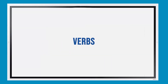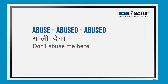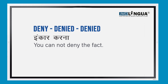Hello guys, today we will talk about verbs. First verb is 'abuse' — the meaning of abuse is 'gali dena'. For example: don't abuse me here. Next verb is 'deny' — the meaning of deny is 'inkar karna'. For example: you cannot deny the fact.